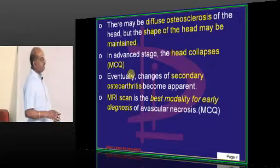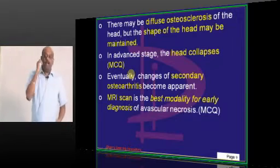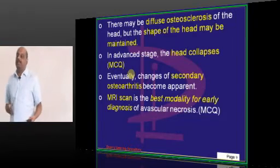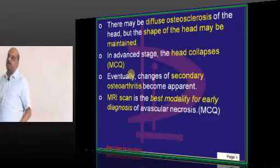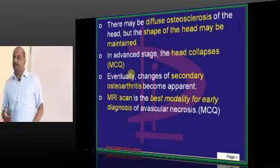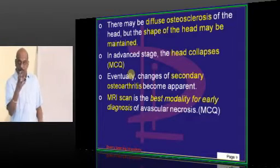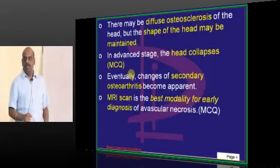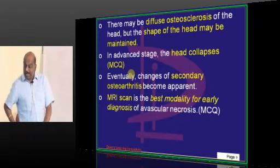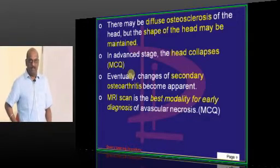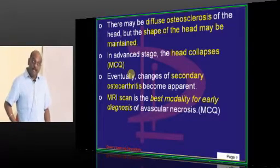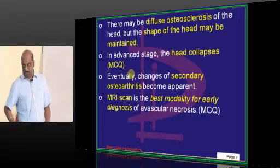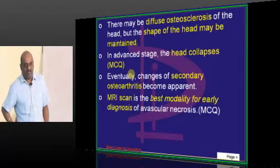What happens when there is avascular necrosis over a long period of time? The femoral head will undergo collapse and osteoarthritis will develop, which may require hip replacement at some point.